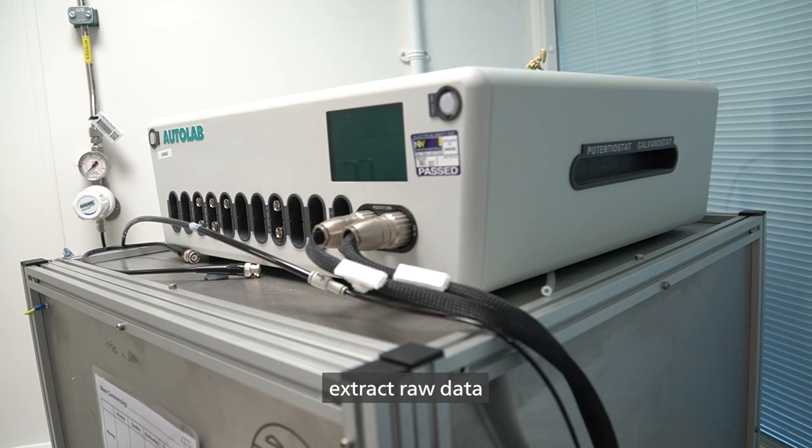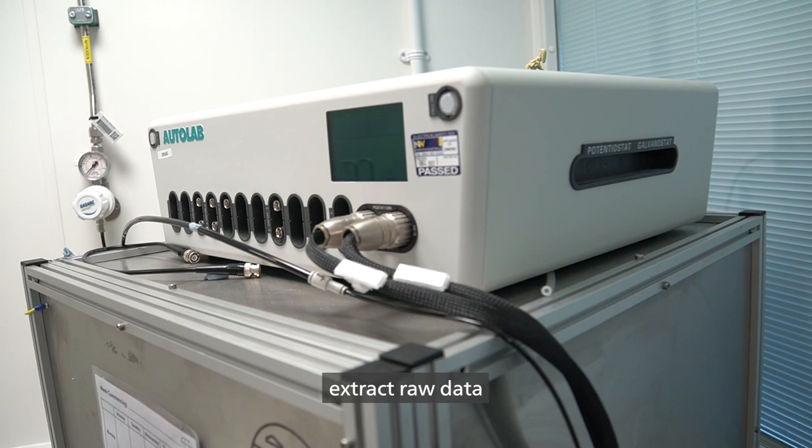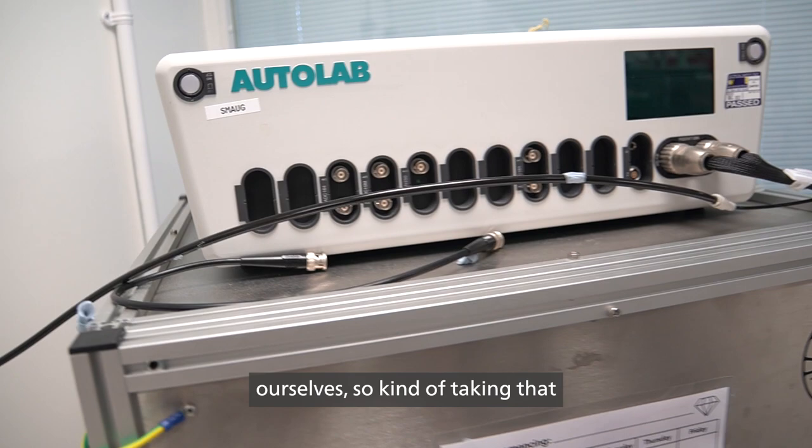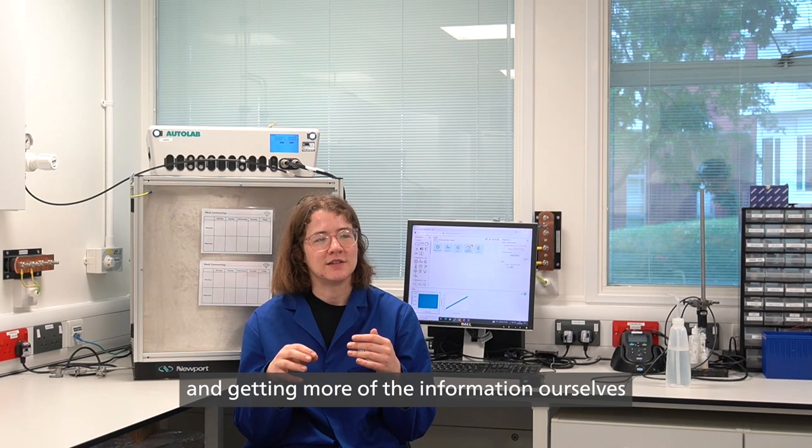We work with Autolab so that we can actually extract all kinds of raw data that we're acquiring in normal square wave voltammetry and then process that ourselves. So we're kind of taking that unknown element out of the equation and getting more of the information ourselves.